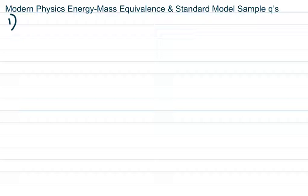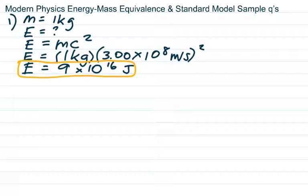There's a lot of writing in the question, and number one actually has very little to do with most of it — but that's a trend now on the Regents exam and with next generation science standards: reading passages where you may or may not need all the information. Number one asks: what's the energy equivalent of one kilogram in joules? We use E equals mc squared. m is one kilogram, c is the speed of light in vacuum. Don't forget to square the c — just the c, not the m. You get nine times ten to the sixteenth joules.